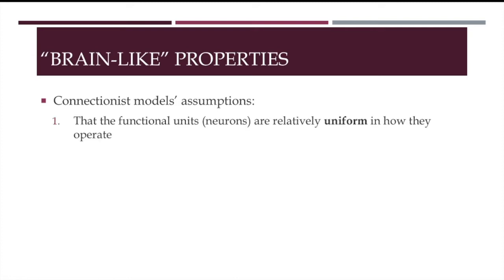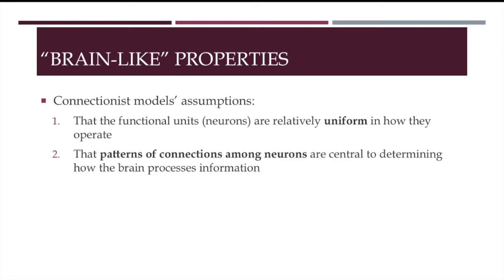For instance, it is assumed that the functional units, the neurons, are relatively uniform in how they operate. Also, it is assumed that the patterns of connections among neurons are central to determining how the brain processes information.